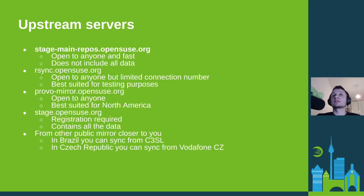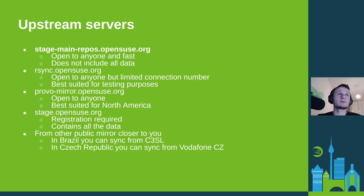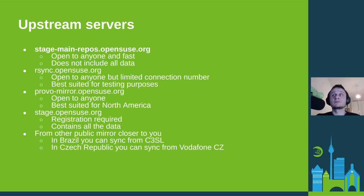To become a mirror you need to fetch files from another server. We have a few servers you can use — for example we have the main repos at opensuse.org, which is open to anyone and is a fast server. It includes all the data you need, so this is the preferred place to fetch data from.